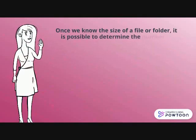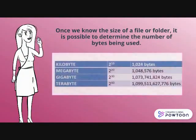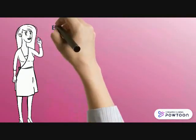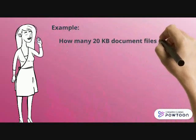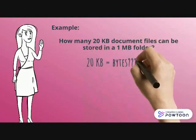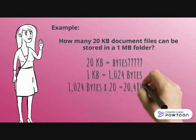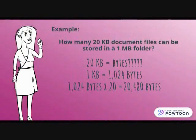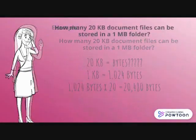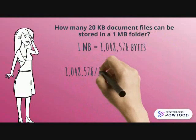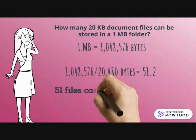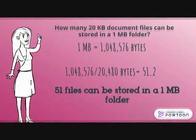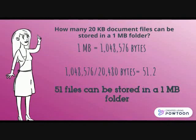Once we know the size of a file or folder, it is possible to determine the number of bytes being used. Let's take a look at this sample question: How many 20 KB document files can be stored in a 1 MB folder? We're going to convert 20 KB to bytes. If 1 KB is equal to 1,024 bytes, then multiply it by 20 — the answer will be 20,480 bytes. Then, if 1 MB is equal to 1,048,576 bytes, divide it by 20,480 bytes. The answer will be 51.2, meaning 51 files can be stored in a 1 MB folder.